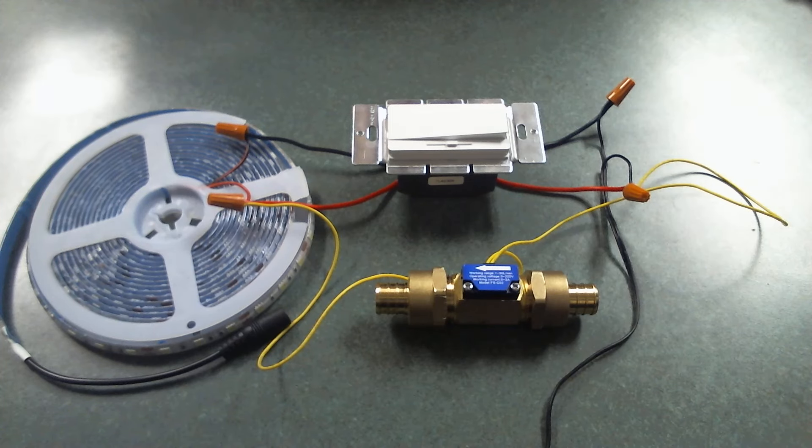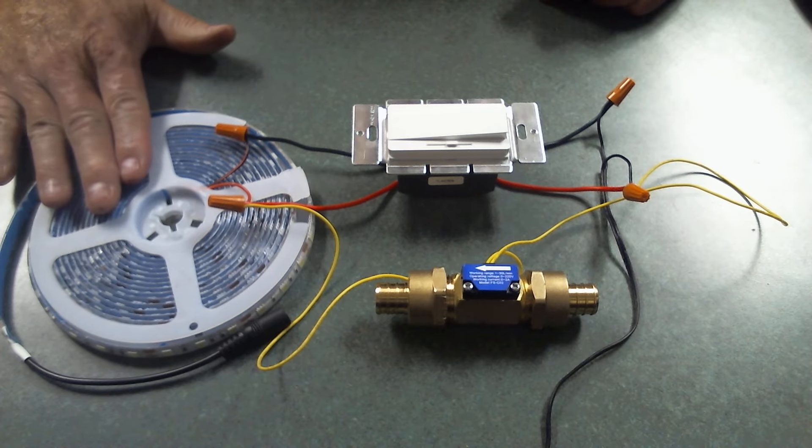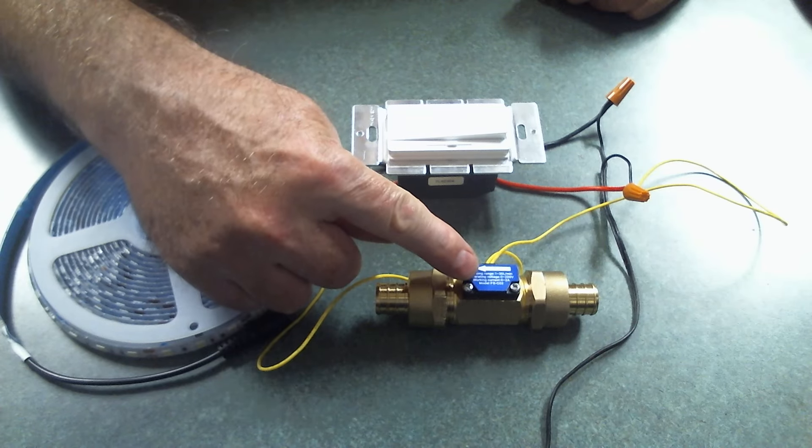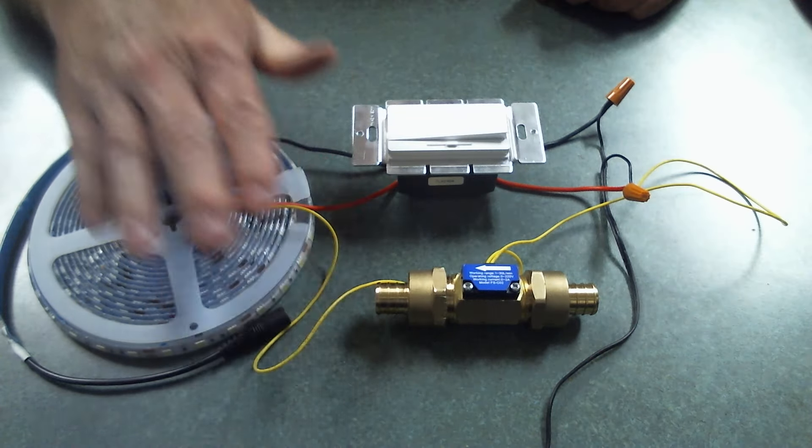Hello everyone and welcome back to my new project. We have a proof of concept here where I'm going to be controlling these LED lights with both a dimmer switch and an inline flow switch for water, so that whenever the water is turned on the lights come on.